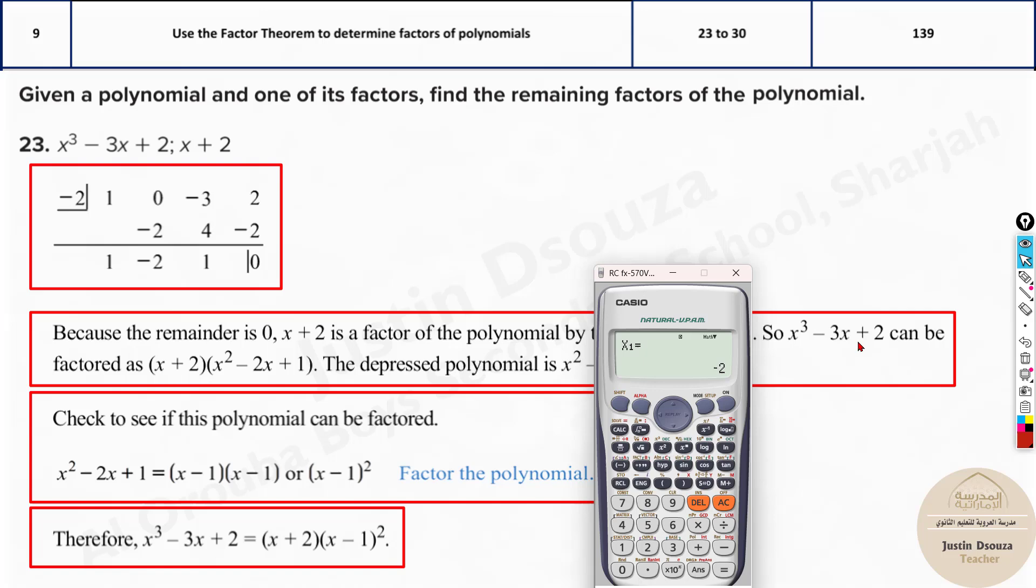If you get the answer, you will get x is equal to 2. Let me write it out: x is equal to -2, not positive 2, it's negative 2. And x is equal to 1.